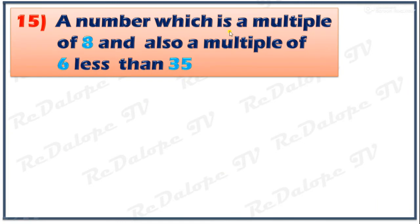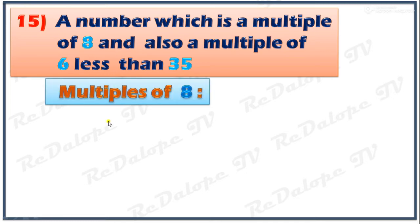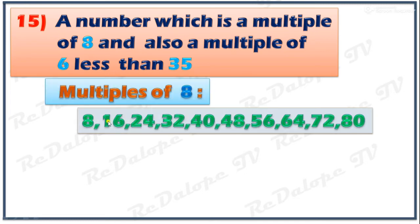A number which is a multiple of 8 and also a multiple of 6, less than 35. First, list down all the multiples of 8 and multiples of 6. The multiples of 8 are: 8, 16, 24, 32, 40, 48, 56, 64, 72, 80, and so on.